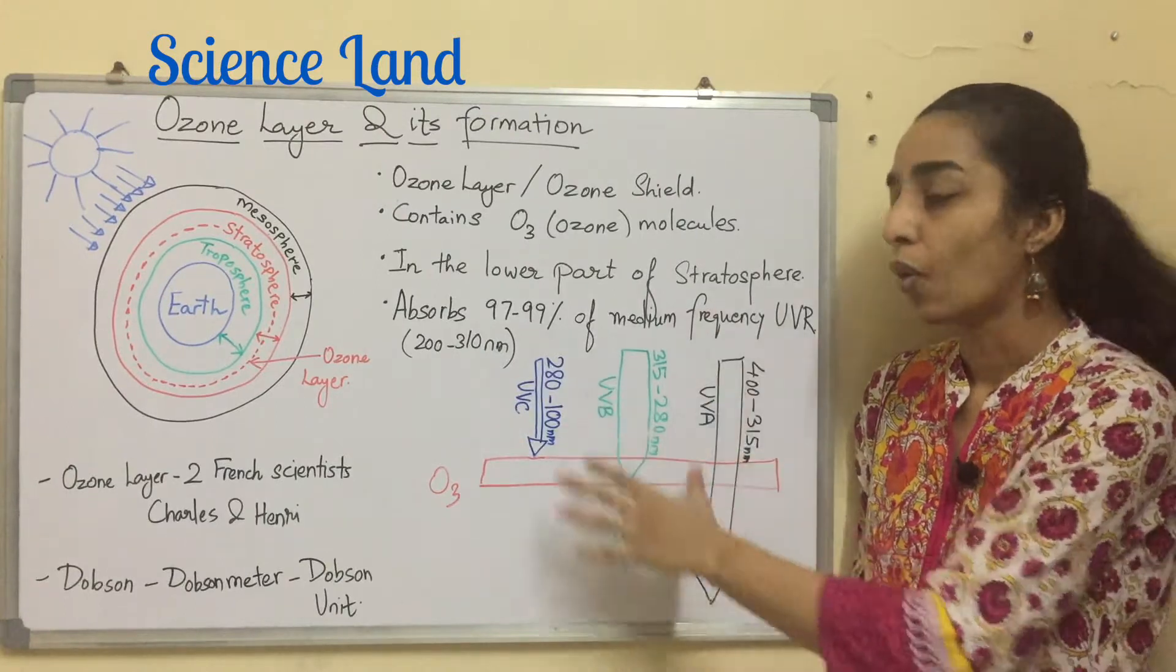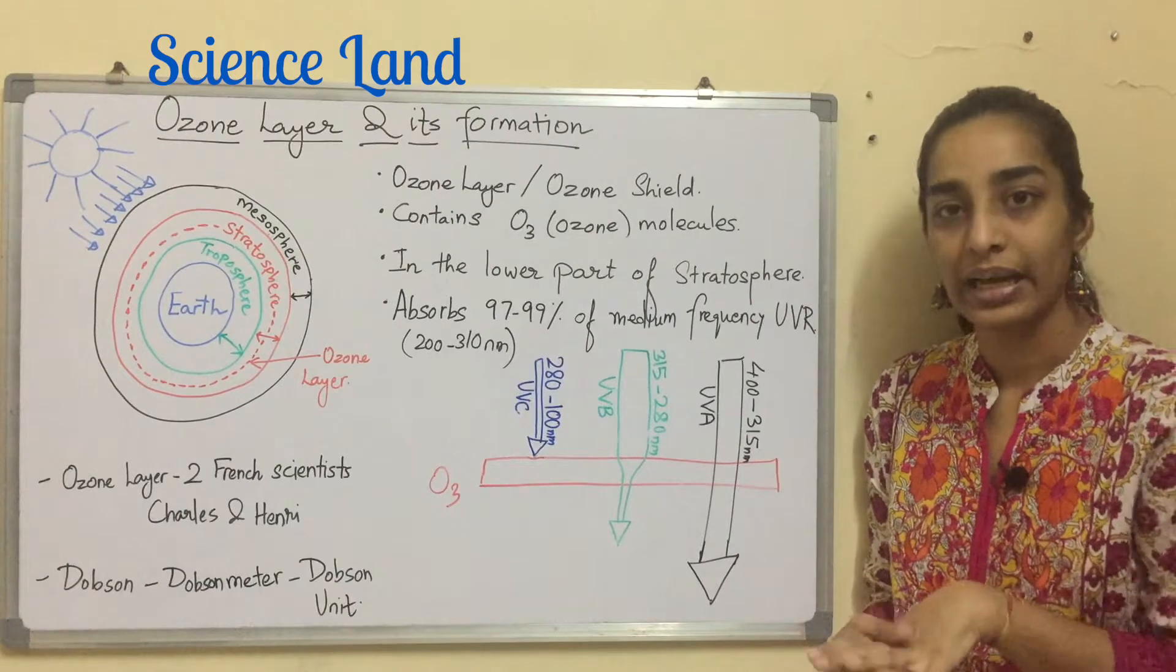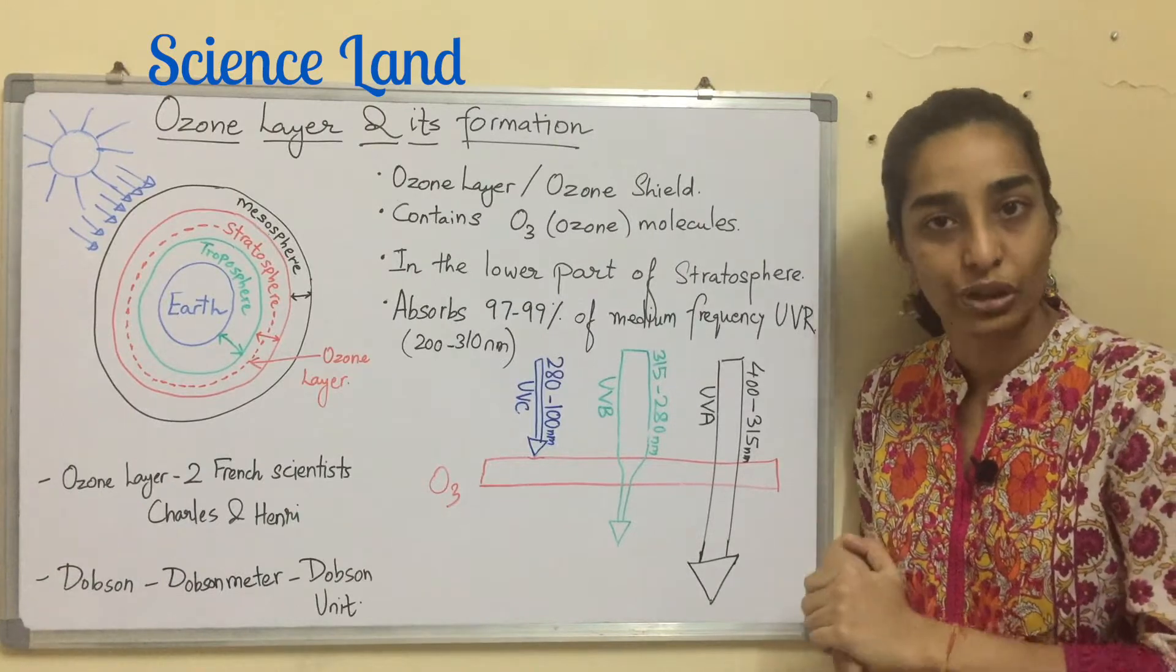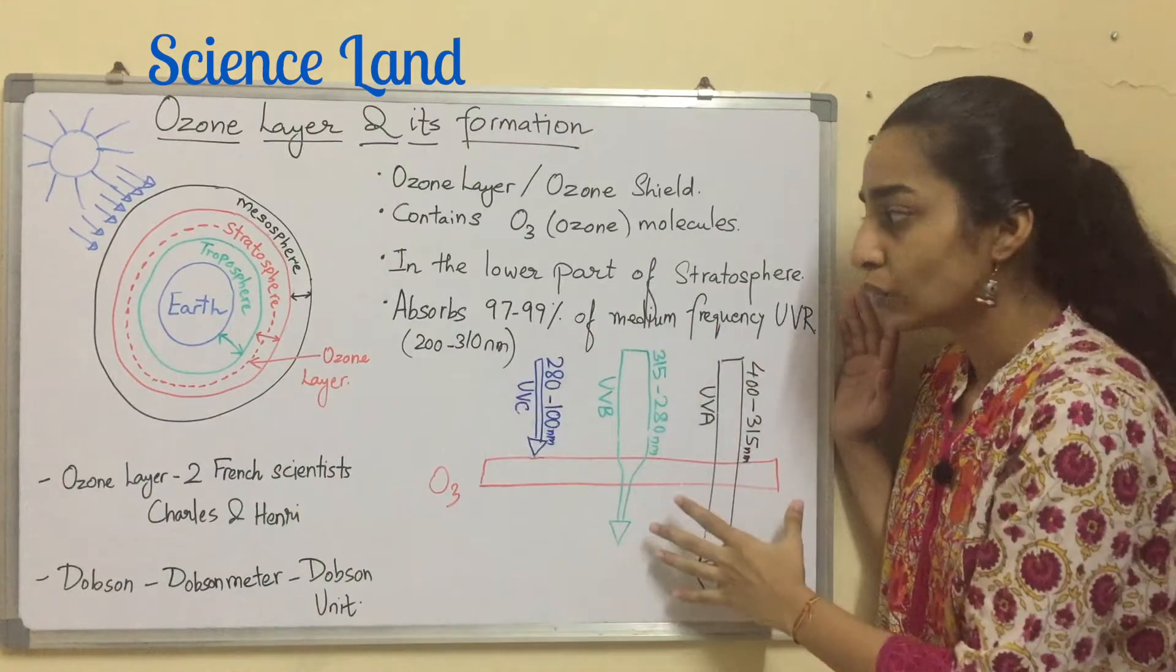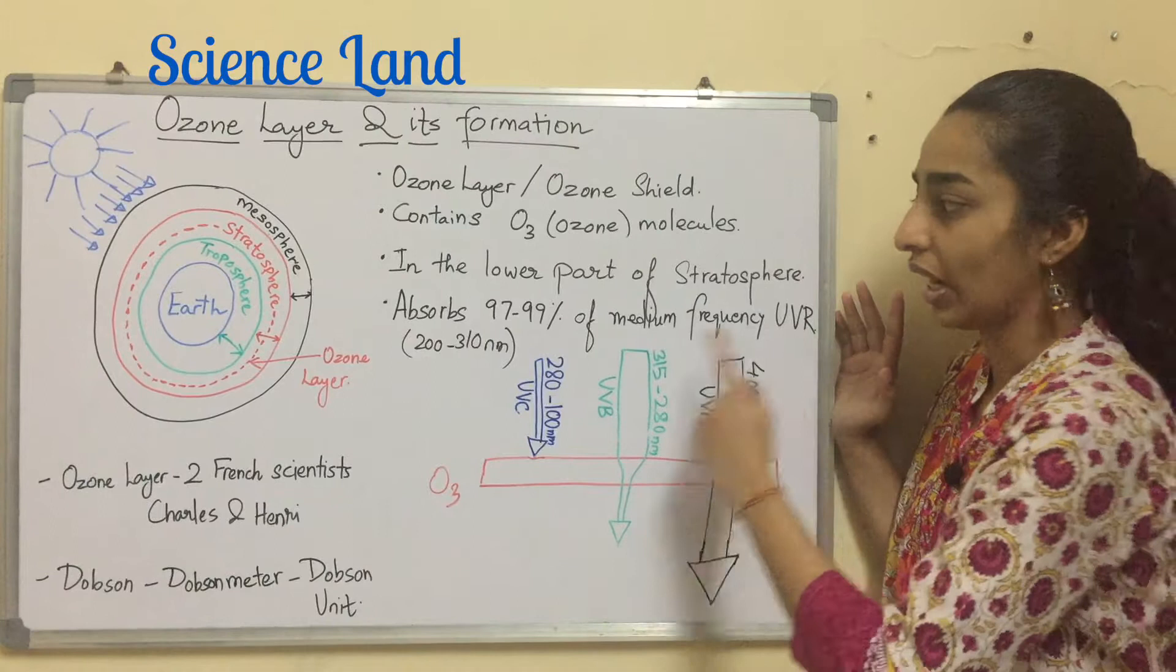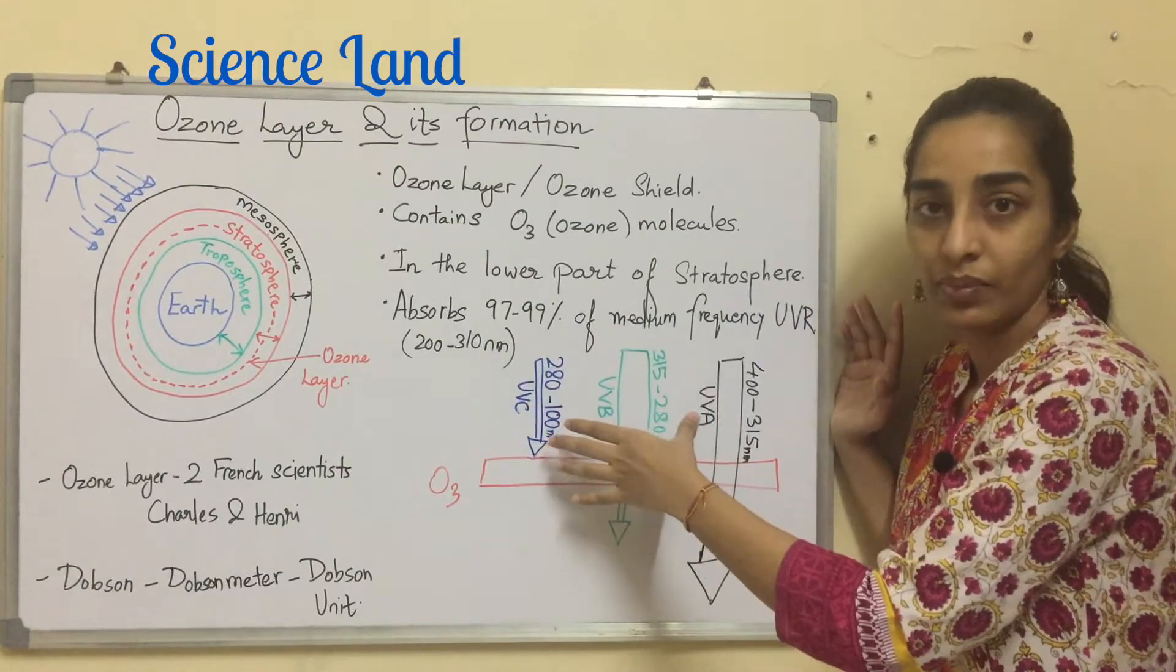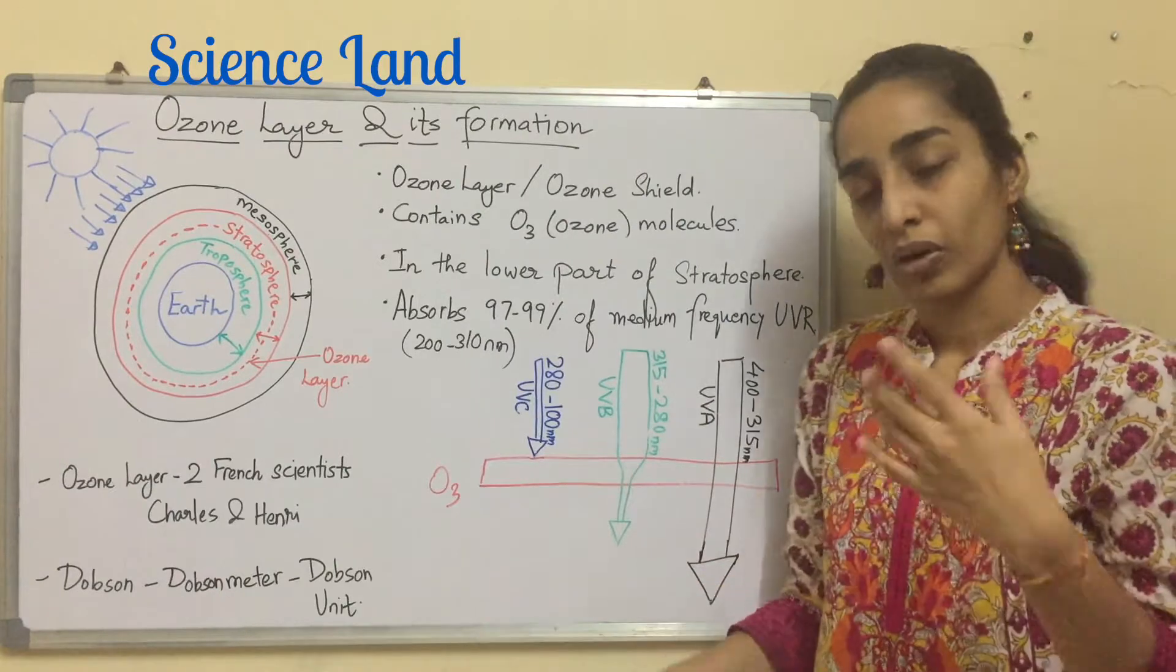UVA is freely passed through the ozone layer because it is the least harmful of all the three types, but evidence suggests that there might be indirect genetic damage or premature skin aging associated with UVA. So conclusion is ozone layer absorbs medium frequency UVR which is 200 to 310 nanometer wavelength, meaning these two wavelengths of UVB radiation it will absorb.